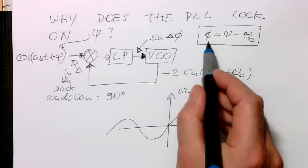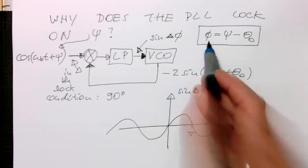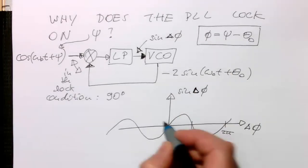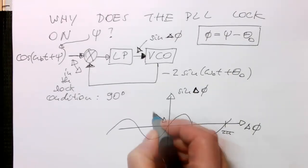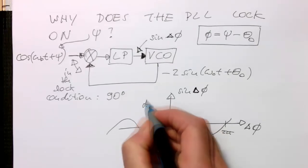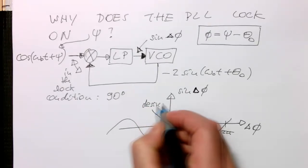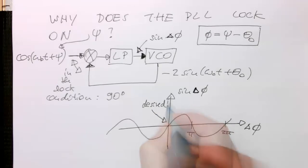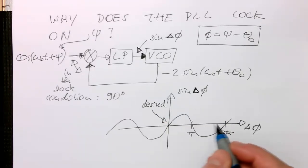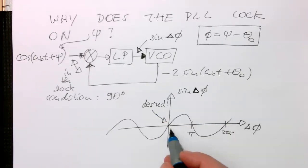this delta phi equals zero. Yeah, so our desirable point is that we would like to end up here. So that's desired. Because at this point here, our phase difference is zero.